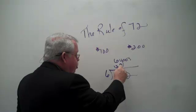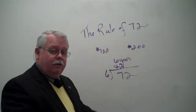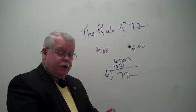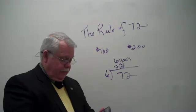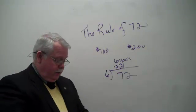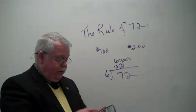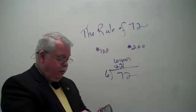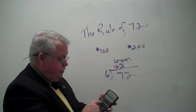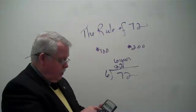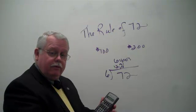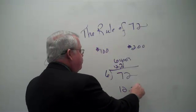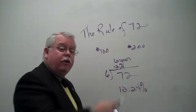That means you would have been earning approximately 12% on your money. If you've got a financial calculator, you can check this out. We'd enter $100 negative as the present value, $200 as the future value, six as N, and compute the interest rate. When you do that, the interest rate comes up 12.24%. So this is an approximation.